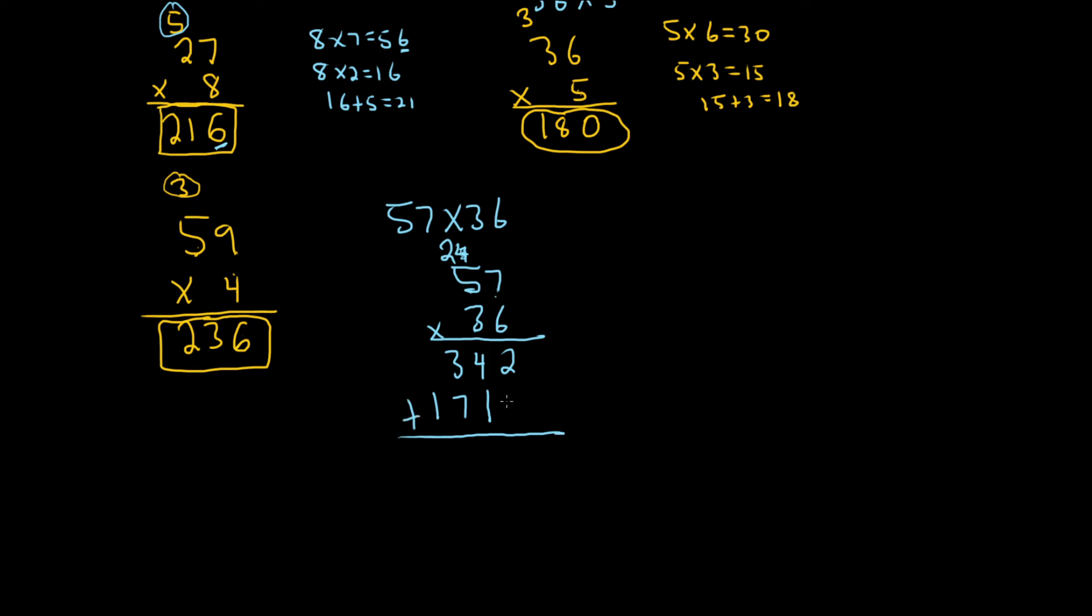You put a plus sign, and then you put a 0 here. And then you just add 2 plus 0 is 2, 4 plus 1 is 5, 3 plus 7 is 11, carry the 1, 1 plus 1 is 2. I feel like I messed up somewhere.